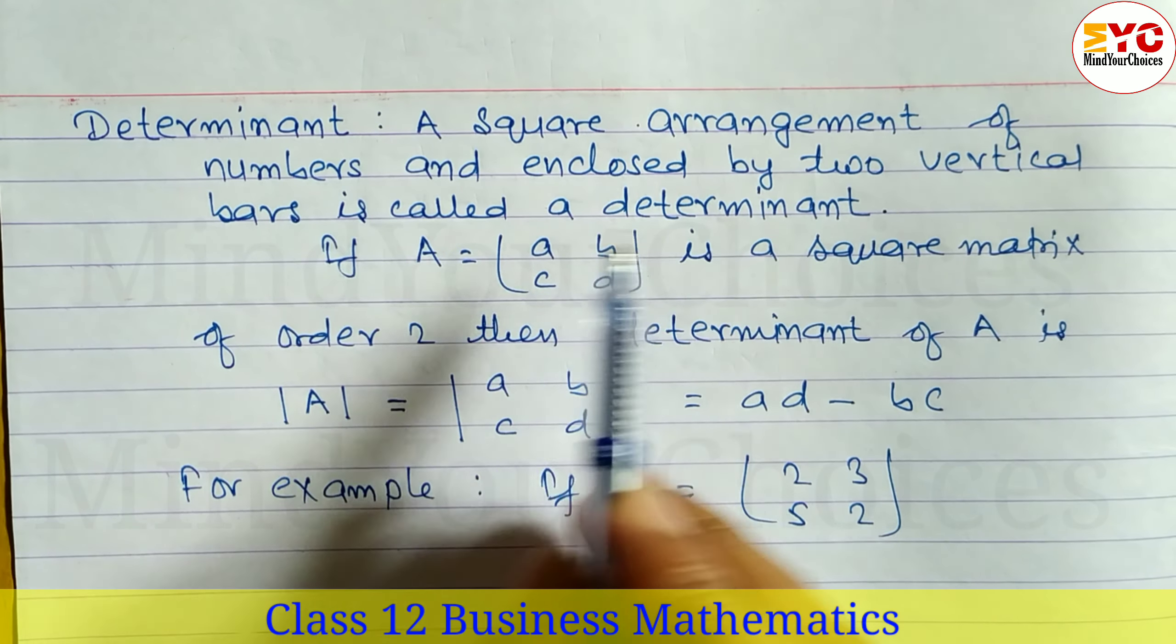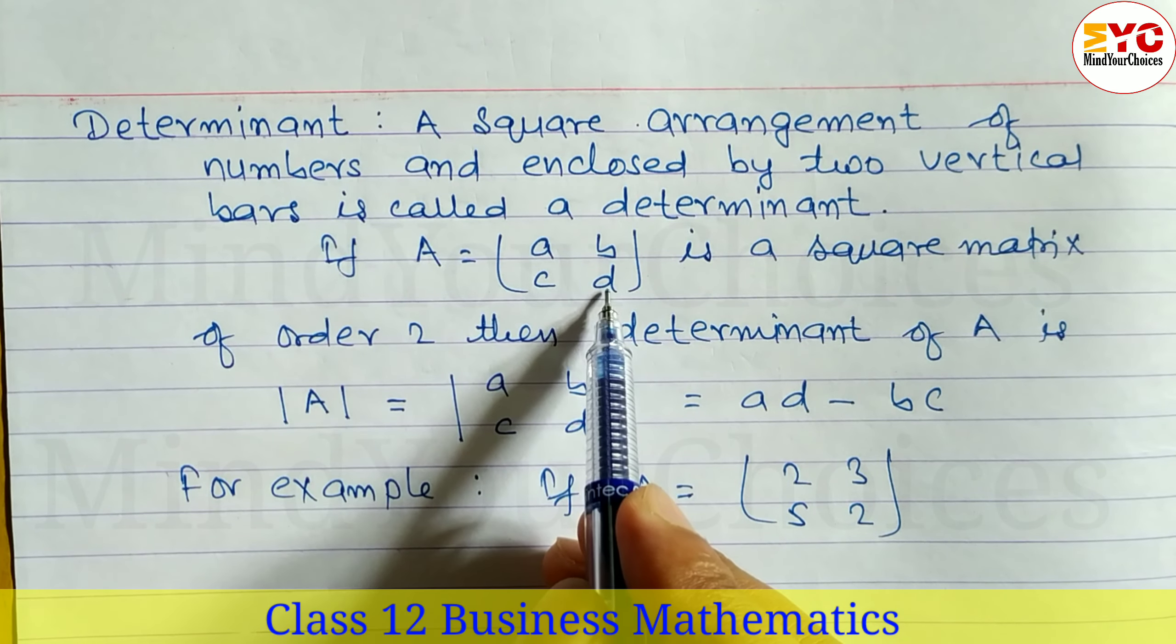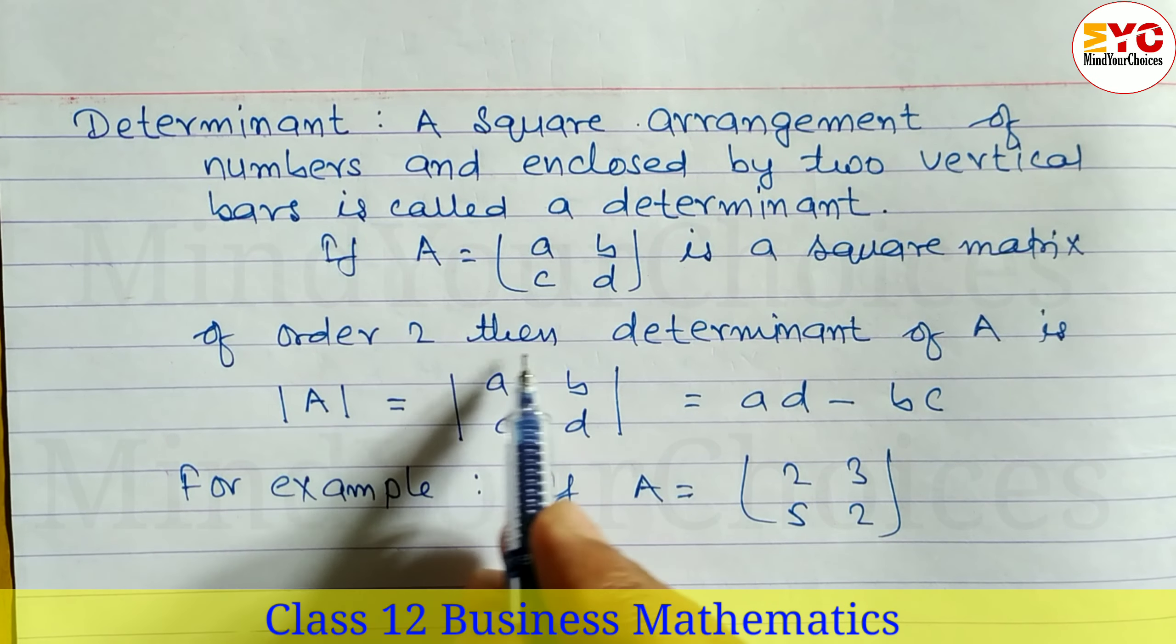Determinant. A square arrangement of numbers enclosed by two vertical bars is called a determinant. This is the definition of determinant.